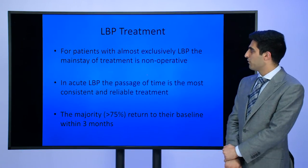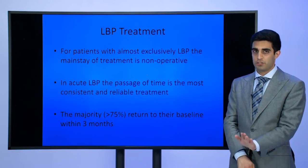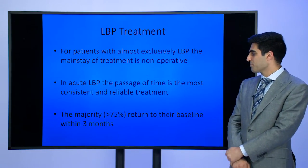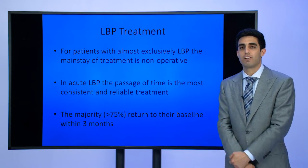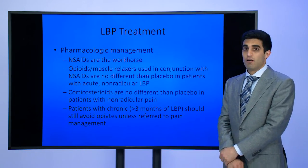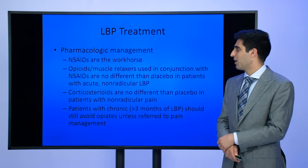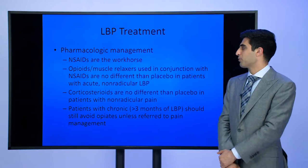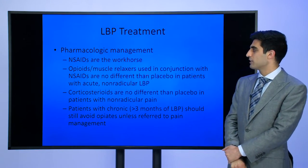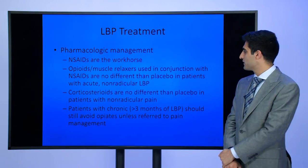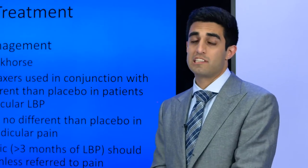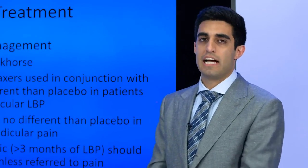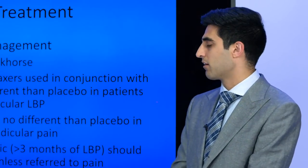How do we treat low back pain? For patients with almost exclusively low back pain, the mainstay of treatment is non-operative. In acute low back pain, the passage of time is the most consistent and reliable treatment, and greater than 75% of patients will return to baseline function within about three months. For pharmacologic management, non-steroidals are the workhorse. Opiates and muscle relaxers could be used in conjunction with NSAIDs, but they are no different than placebo in patients with acute non-radicular low back pain.